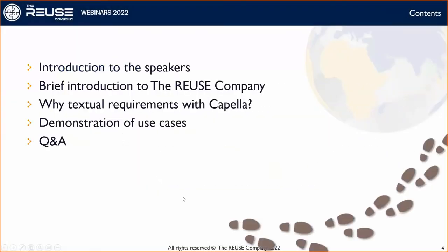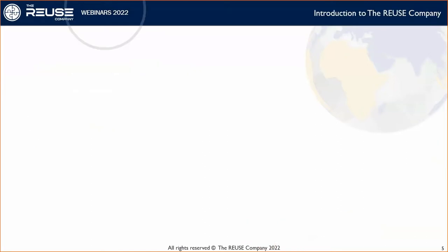Welcome everybody. This is the list of contents for today's webinar. After the introduction of both speakers, I will have a brief introduction to the Reuse Company and I will try to convince some of you, or just remind some others, of the need for textual requirements even when we deal with model-based systems in Arena, especially with Capella. We will go through a demonstration of seven different use cases of having this connection as seamless and fully consistent as possible between textual requirements and models.